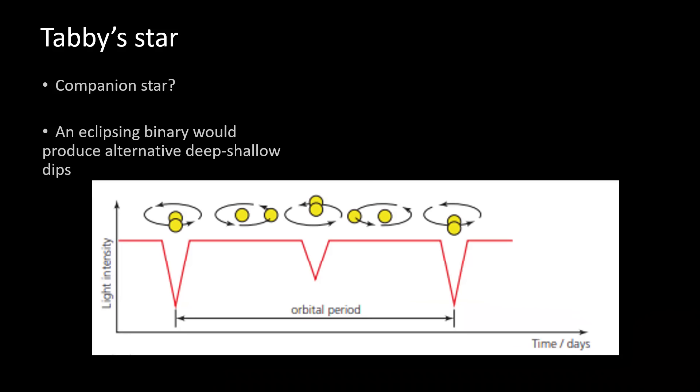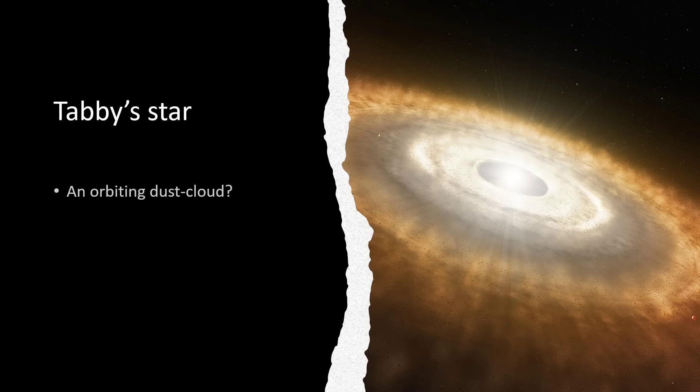Well if it's not a planet and it's not a companion star, how about a dust disc going around? Well that's possible, but dust didn't seem necessarily quite to make sense why a disc of dust would have such irregular and strange behavior. So it remains a possibility but we're not entirely sure on that one. It would have to be very lumpy.